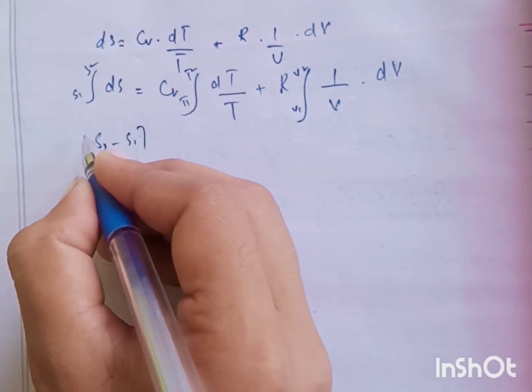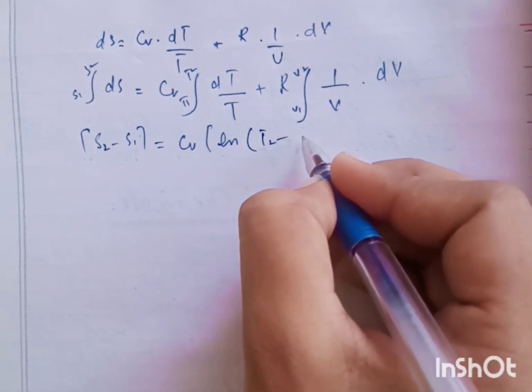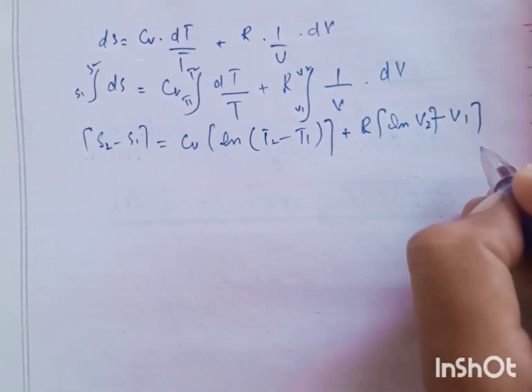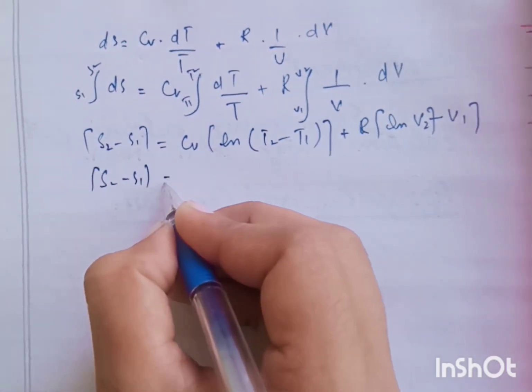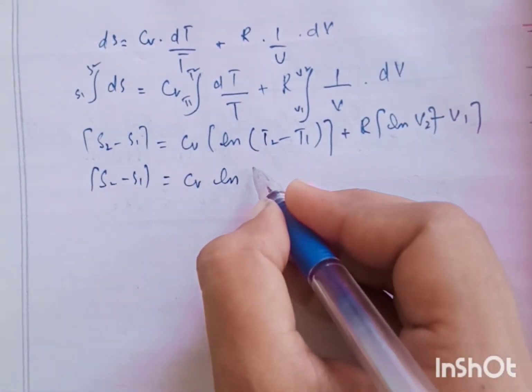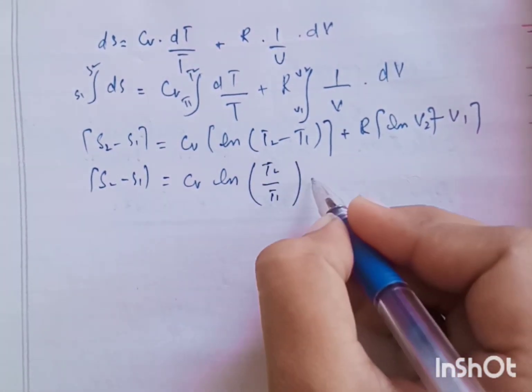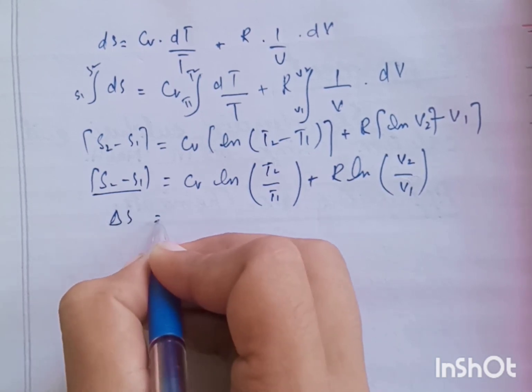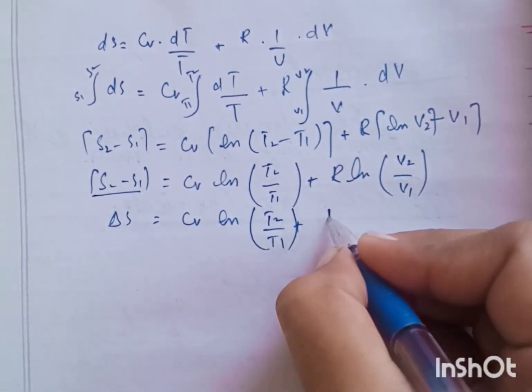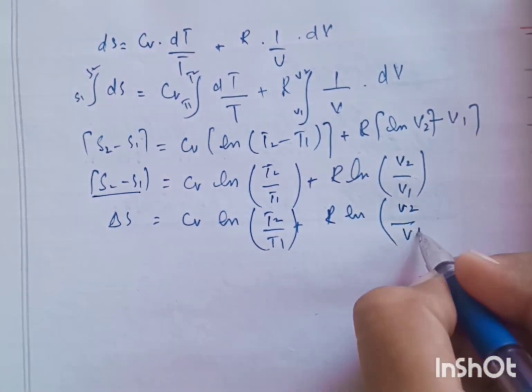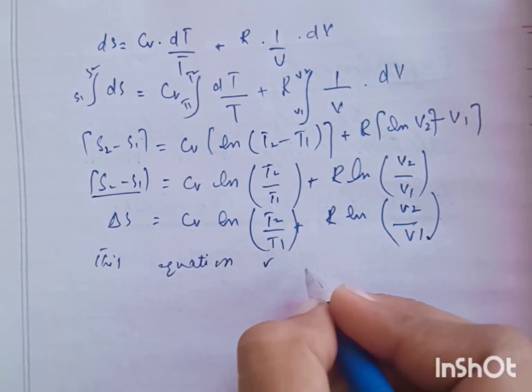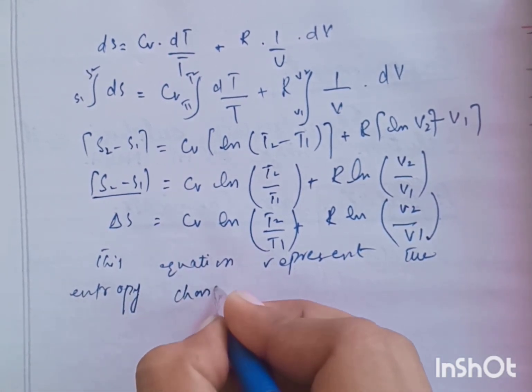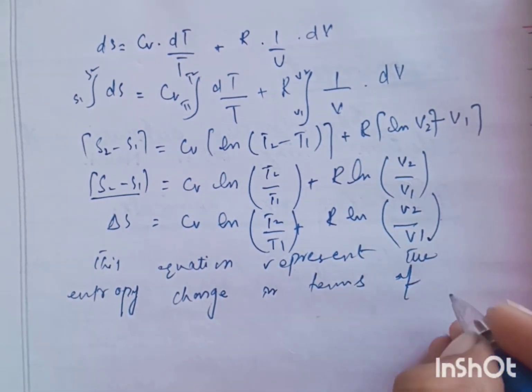S2 minus S1 equals to CV natural log T2 minus T1 plus R natural log V2 minus V1. S2 minus S1 equals to CV natural log T2 over T1 plus R natural log V2 over V1. This equation represents the entropy change in terms of volume and temperature.